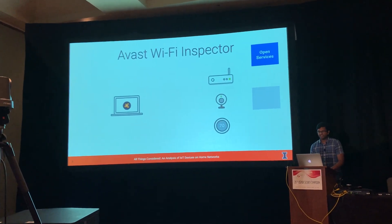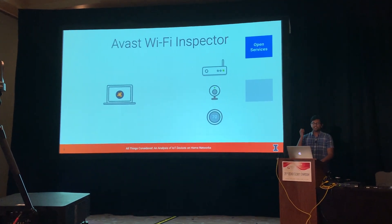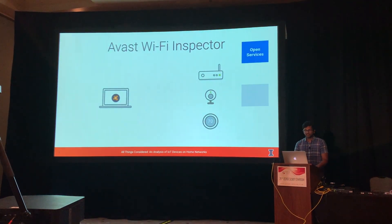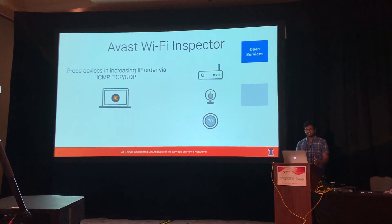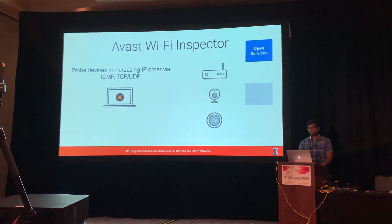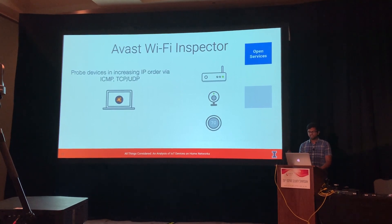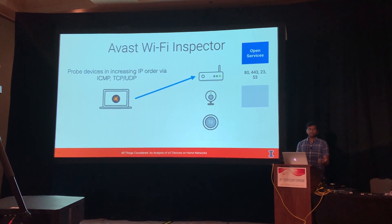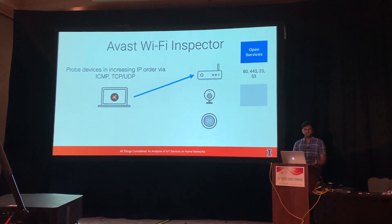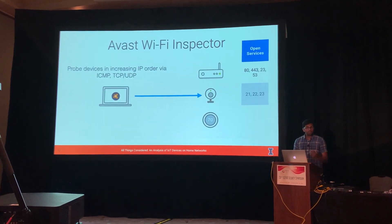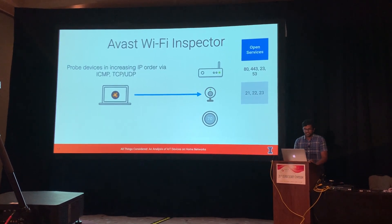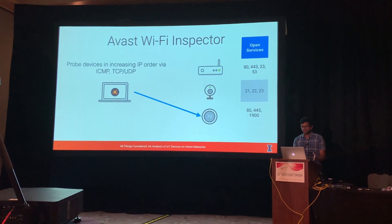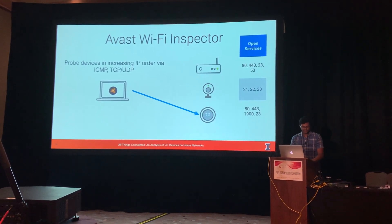Let's say this is your home deployment. You've got four devices: a router, a surveillance camera, a smart thermostat, and a computer running the Avast Home Security software. The tool starts by actively probing devices in increasing IP order via ICMP, TCP, and UDP, and figures out what services are open on each device. Your router might speak HTTPS, DNS, and Telnet. Your camera might have FTP, SSH, and Telnet. Your thermostat might have an HTTPS server, speak UPnP for device discovery, and also run a Telnet server — because why not?